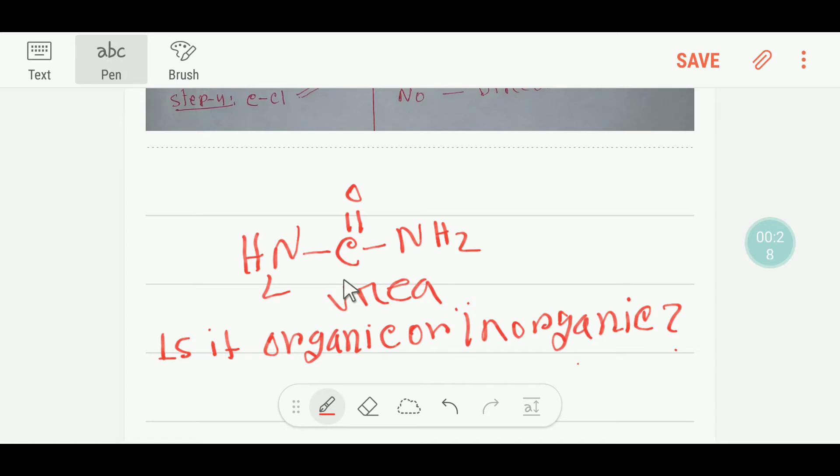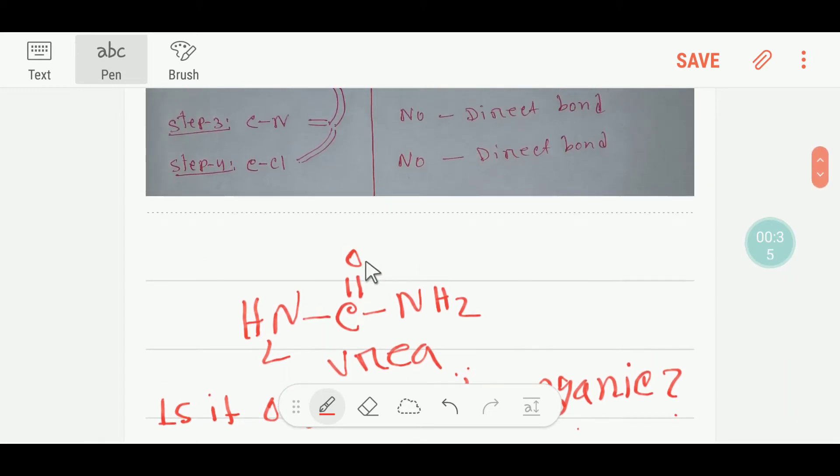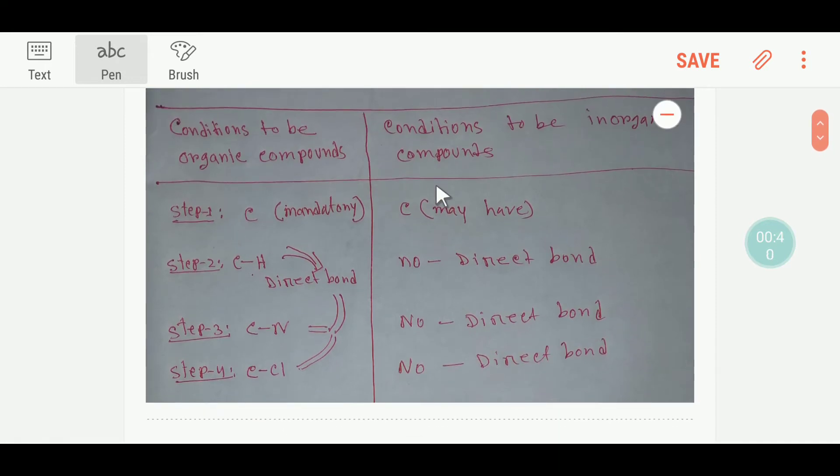To determine this compound as organic or inorganic, we have to look at these rules. A compound to be organic has to follow one or two of these rules, and in case of inorganic compounds, a compound must follow this rule.